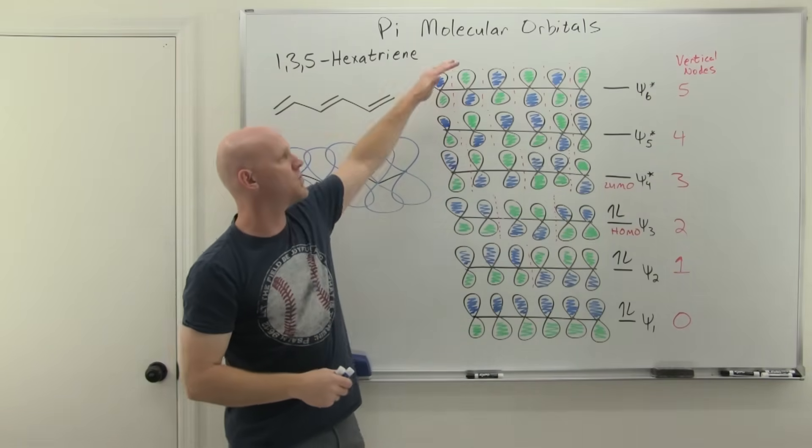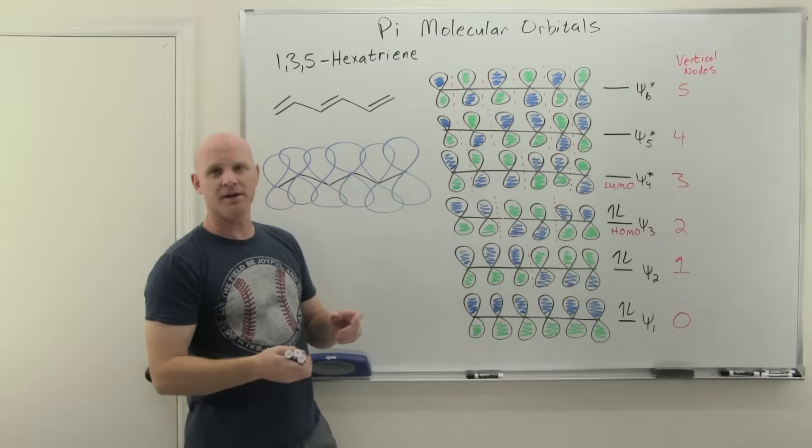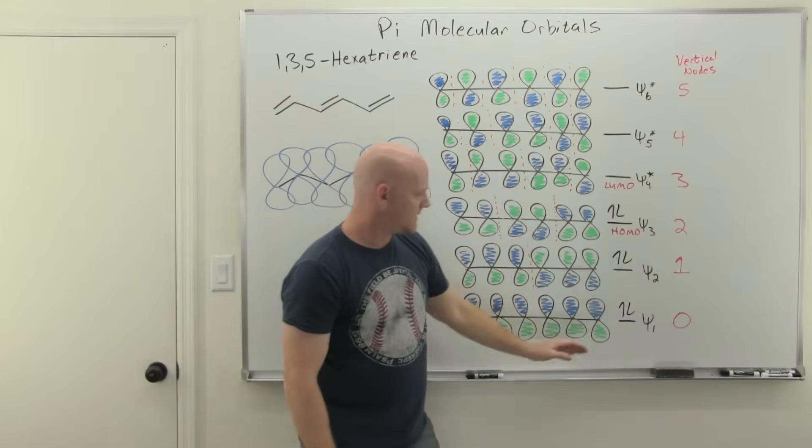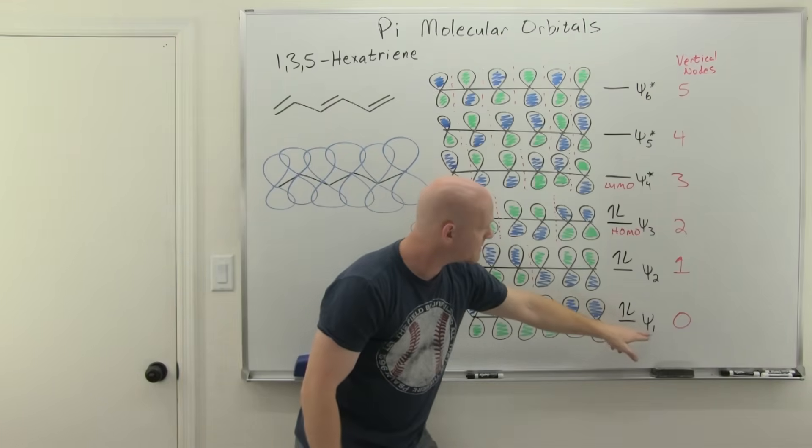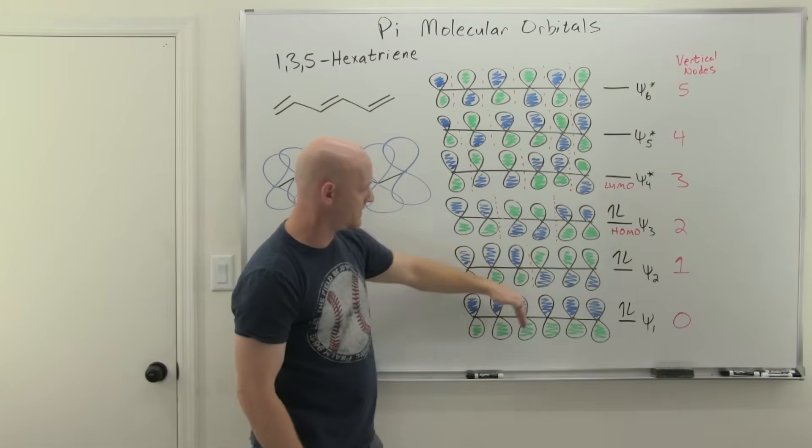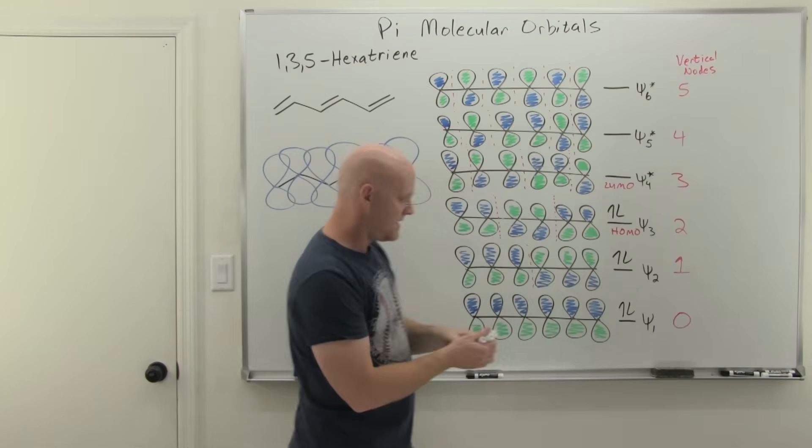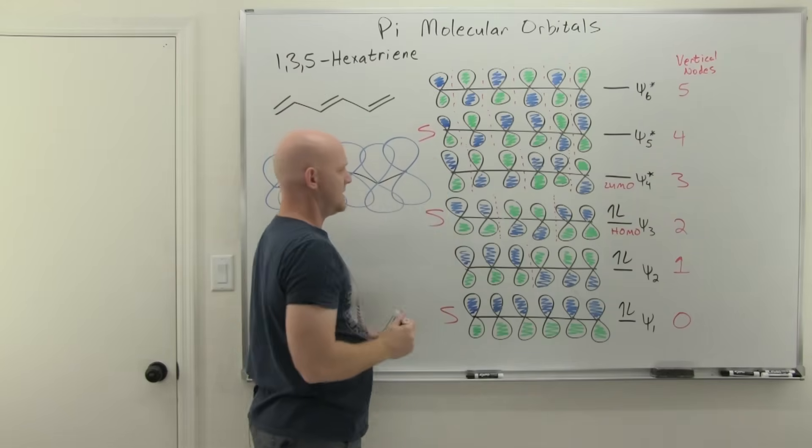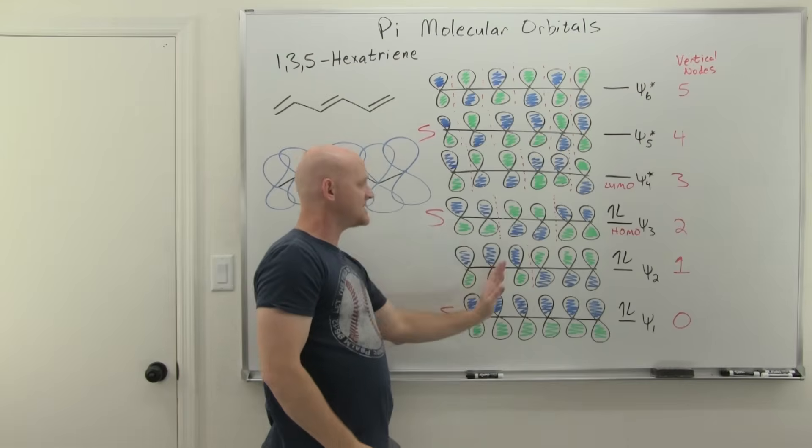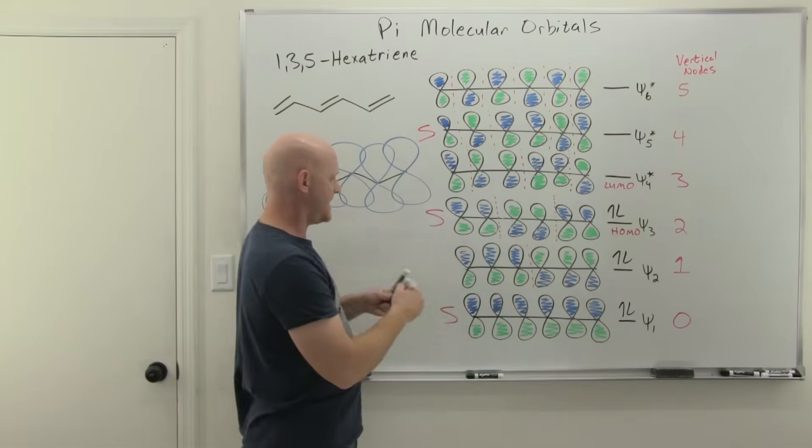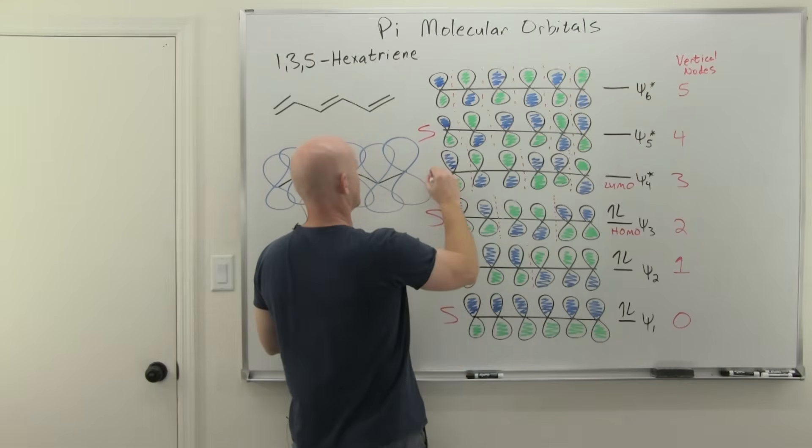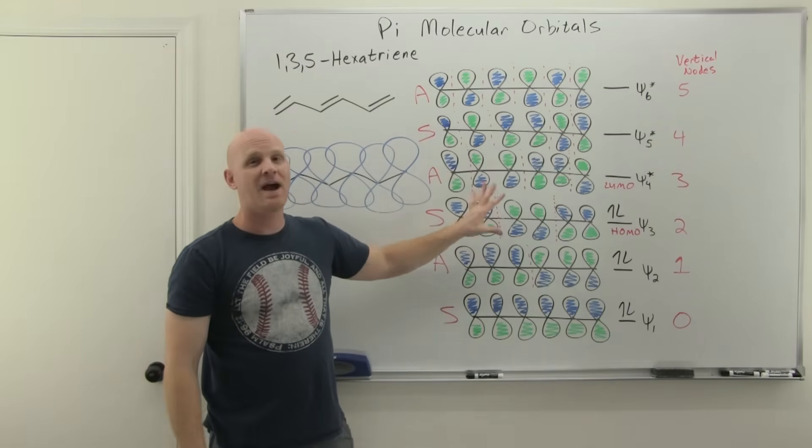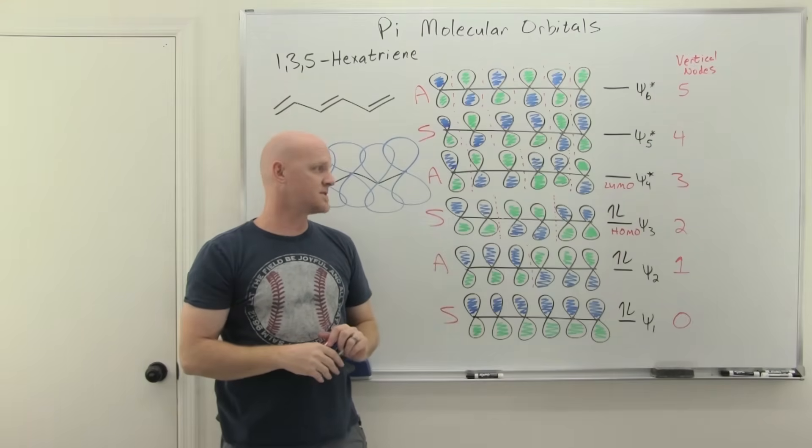Now we've drawn all the molecular orbitals for 1, 3, 5 hexatriene. And once again, I do want to remind you that when you look at these, you should see that the lowest energy one in every odd number. So Psi 1, Psi 3, Psi 5, they are all symmetrical. The left-hand side is the perfect mirror image of the right-hand side. So symmetric, symmetric, symmetric. And then every other one, your left-hand side is the exact opposite of the mirror image of the right-hand side. And they're anti-symmetric. And again, we brought that up earlier. I just want to reinforce that again because when we get to pericyclic reactions, this will be helpful to us for some of them.